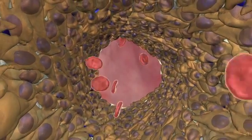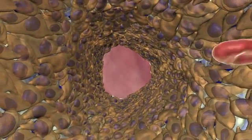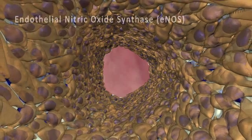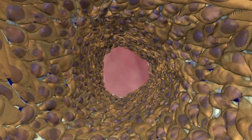As blood flows through the vessel, it creates sheer stress on the endothelium. This increases the intracellular calcium concentration and activates the enzyme endothelial nitric oxide synthase to produce nitric oxide.